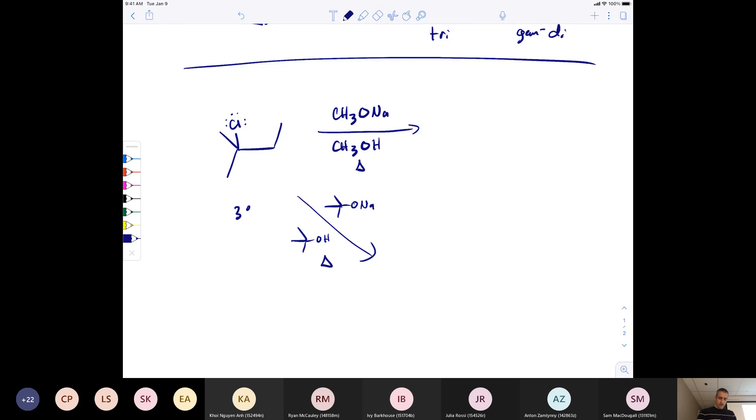Zaitsev's rule says that when you have a small alkoxide, the most substituted alkene is going to be the major product. This one is tri-substituted, this one is di. If you have a bulky base, we follow Hoffman's rule, which says the least substituted alkene is the major product. You could pick which alkene you wanted by choosing which base and solvent you wanted.